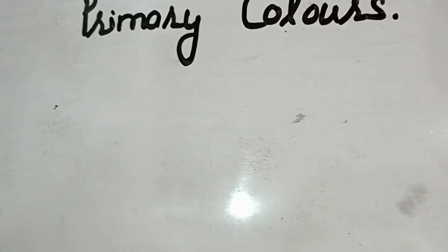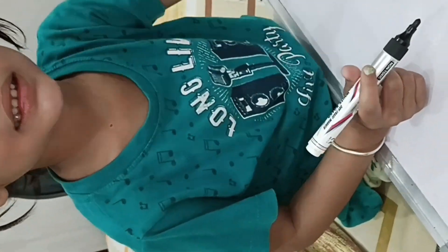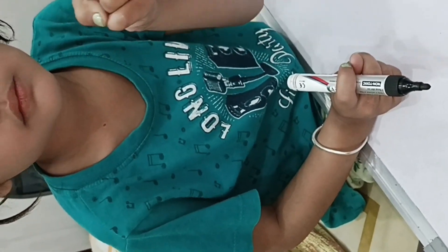How many primary colors are there? Three. Which colors are they? Red, Yellow, Blue.